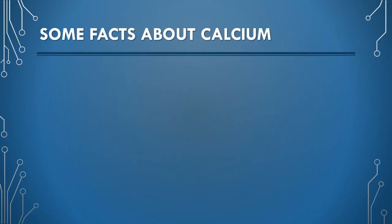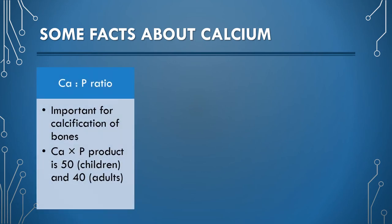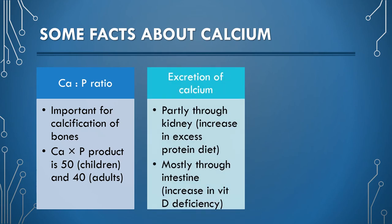The calcium and phosphorus ratio is important for the calcification of bones. The product of calcium and phosphorus should be 50 in children and 40 in adults. This product is less than 30 in rickets, which is one of the deficiency diseases of calcium. Calcium is excreted via two mechanisms: through the kidney and through the intestine.